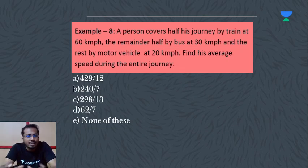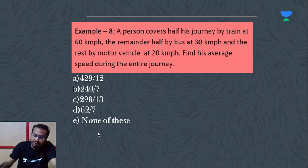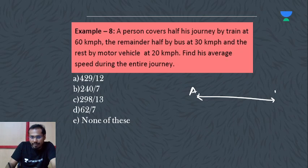In this question, if you understand one formula, you can apply it easily. The question says a person covers half his journey by train - so half the distance is by train. Then it says the remainder half by bus at 30 km per hour and the rest by motor vehicle.